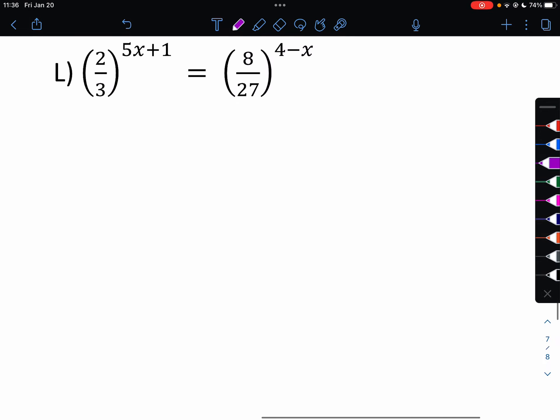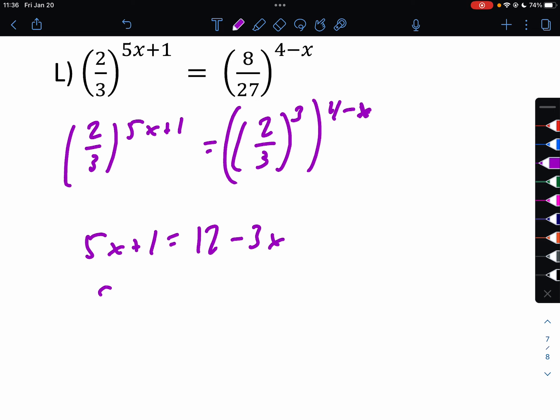Our last one. We can write this as 2 thirds to the 5x plus 1 equals 2 thirds cubed to the 4 minus x. So then 5x plus 1 equals 12 minus 3x. So 8x equals 11. x equals 11 eighths.